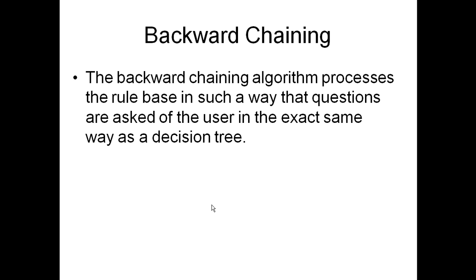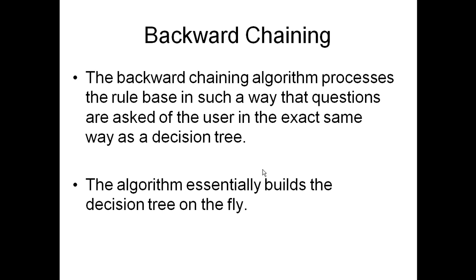The program that does that is called backward chaining. The backward chaining algorithm processes the rule base in such a way that the questions are asked of the user in the exact same way as the decision tree. The algorithm essentially builds the decision tree on the fly. I'm going to walk through the way backward chaining works by looking at the rule base for the plant classification problem — it is on page 39 of your Contemporary Artificial Intelligence text. I suggest you print out that page before proceeding so you can refer to the rules by number.